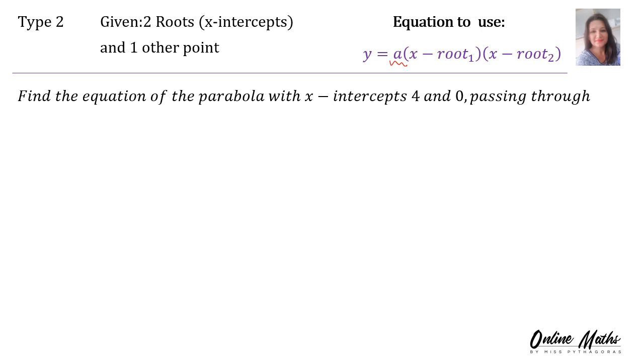Here's the example. Find the equation of the parabola with x-intercepts 4 and 0. So the x-intercepts 4 and 0 are your roots. Passing through the point 3 and 1.5. And then this other point consists of an x and a y. And that is how you're going to calculate a's value.